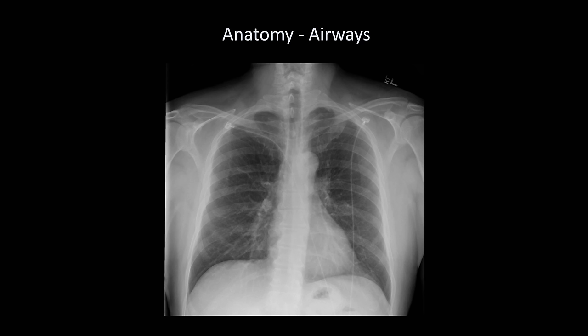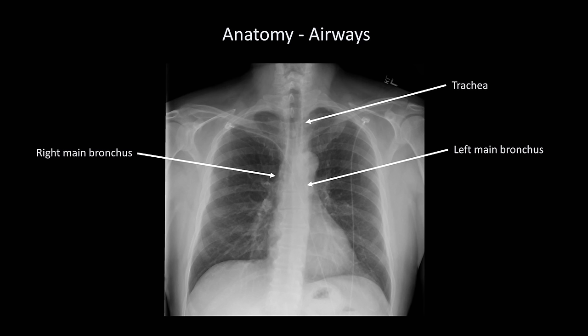A is for the airways. There are three anatomic airway structures that are typically visible on a normal x-ray: the trachea, which is normally in the midline, and the right and left main bronchus. Remember that the patient's right will be on the left side of the screen. The left main bronchus tends to take off from the trachea at a slightly more horizontal angle compared to the right, which is why aspirated foreign bodies, if small enough, are more likely to end up in the right lung. It's also why endotracheal tubes, if advanced too far, end up in the right main bronchus, blocking off ventilation to the left.